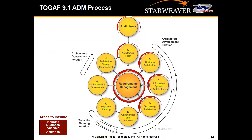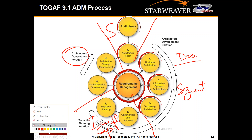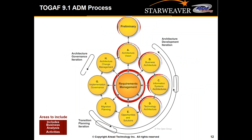Just to remind you quickly of what we've covered: this is the strategic consideration; this is development, also known as segments considerations; this is the capability consideration that you will be implementing; and finally governance. These are the different partitions you're going to have in the architecture development method.